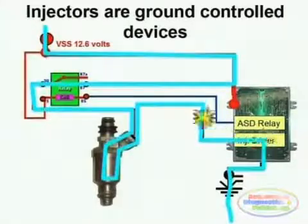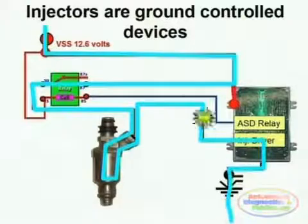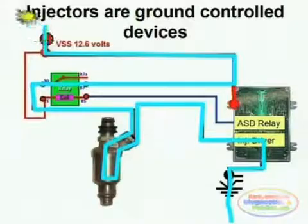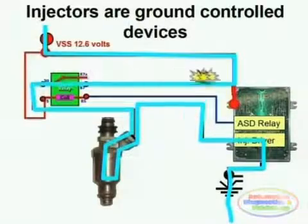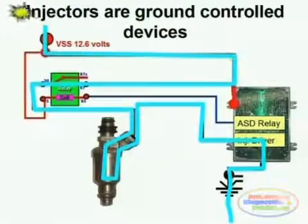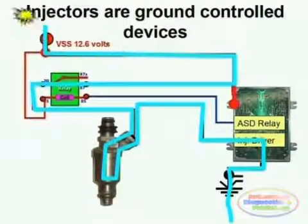Here we see in light blue the current path that energizes the injector to open. This current path flows from the negative side of the ECM through the internal transistor, through the injector winding, and up through the relay and the voltage supply line.